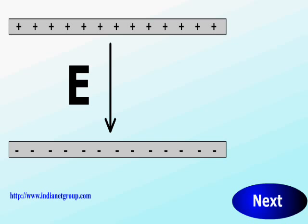When there is no dielectric slab, the electric field is E as shown, pointing from the plus plate towards the minus plate.